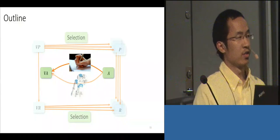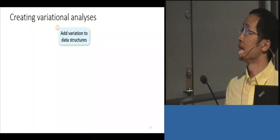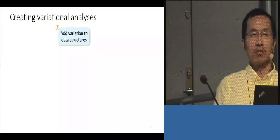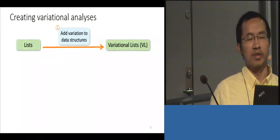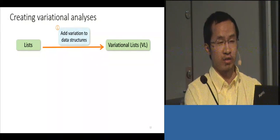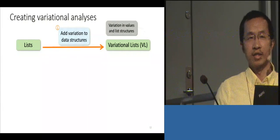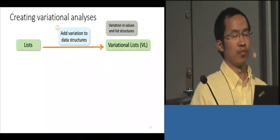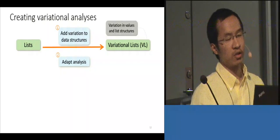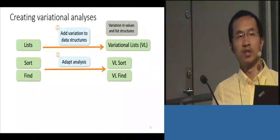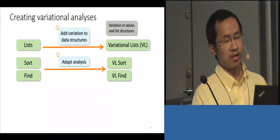Now let's look at how we create variational analysis. Traditionally, this is done manually and involves four steps. The first step is to add variation to data structures — since we represent analysis of a set of programs, if we originally have lists, we end up with variational lists where variation can be in the values of elements or the list structure. We also have to adapt the analysis for these variational data structures, giving us a variational sort algorithm — and designing a variational sort algorithm is not a simple task.